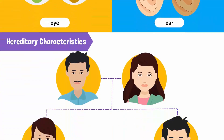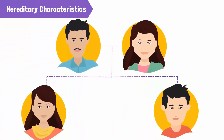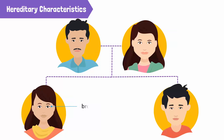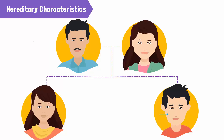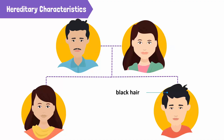Let's look at this family. The daughter, Sara, has straight brown hair just like her mother. The color of her eyes is brown like her father's. The son, Asif, has the same complexion as his mother and the same nose. But the color of his hair is black like his father's.